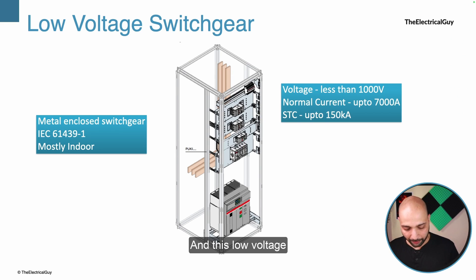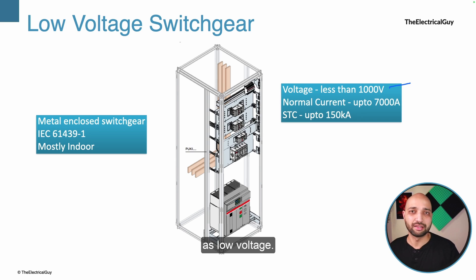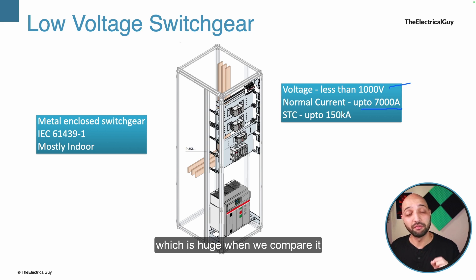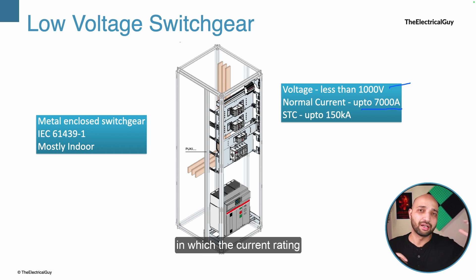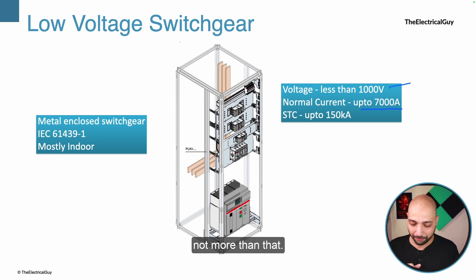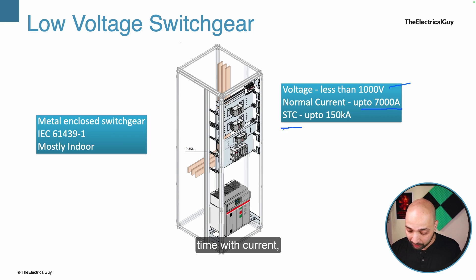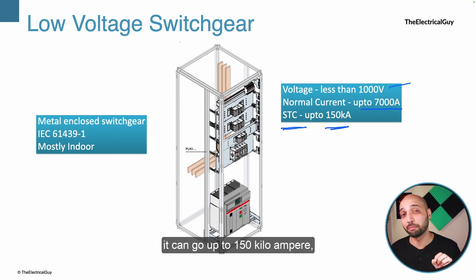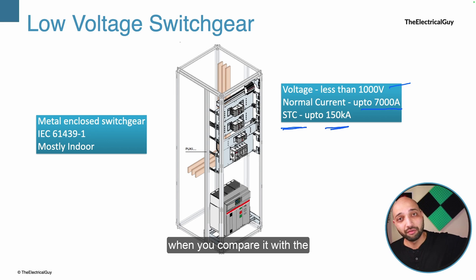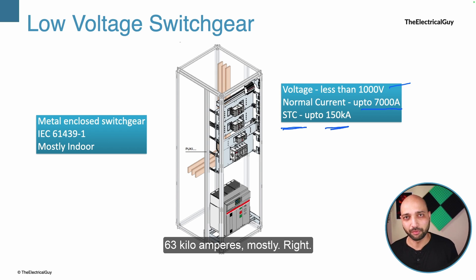Low voltage switchboards cover anything less than 1000 volts. The normal current rating is up to 7000 amperes, which is huge compared to medium and high voltage equipment where the current rating generally lies between 4000 and 5000 amperes. The short-time current (STC) can go up to 150 kilo-amperes, compared to high and extra-high voltage where STC is mostly limited to 63 kilo-amperes.